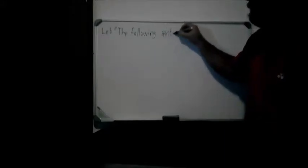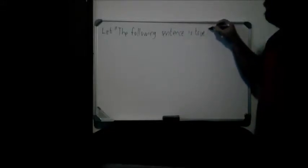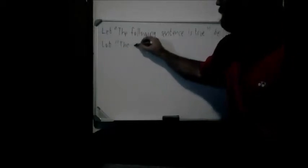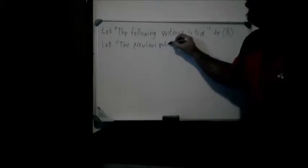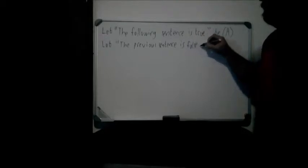The first sentence in this case is: "The following sentence is true." We're going to let that be A. So statement A is, "The following sentence is true." The second sentence — which is the following sentence according to that first one — is: "The previous sentence is false." And we are going to let this equal B. Now we have our two statements, A and B, and they refer to each other.